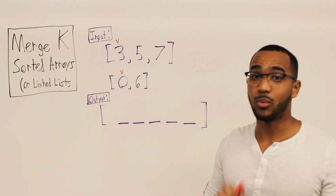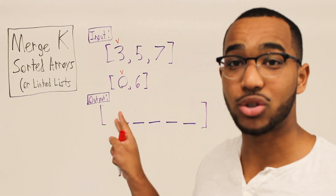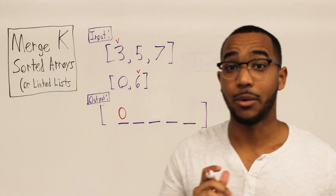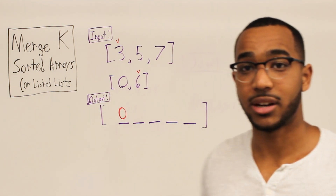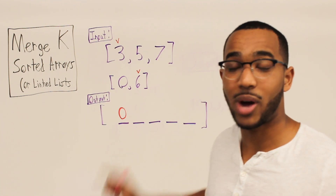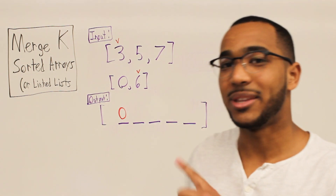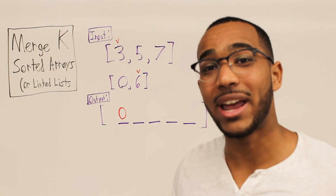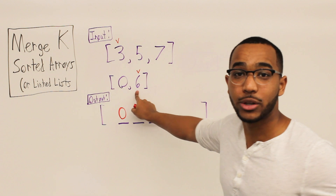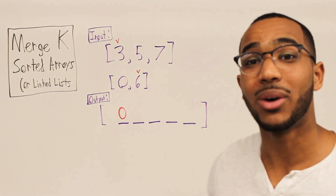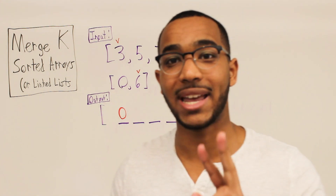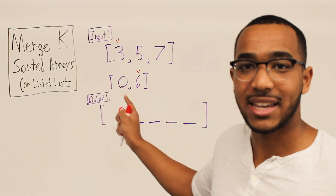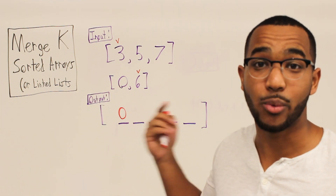Now we have a pointer on each of these. What do we do? We make a comparison between the two numbers that we have pointed to. Zero is less than three, so zero gets the first placement. What I just did is advance the pointer to the six. Why? I just extracted an item from the second array, and now the next least item in the array we're comparing against is going to be six.